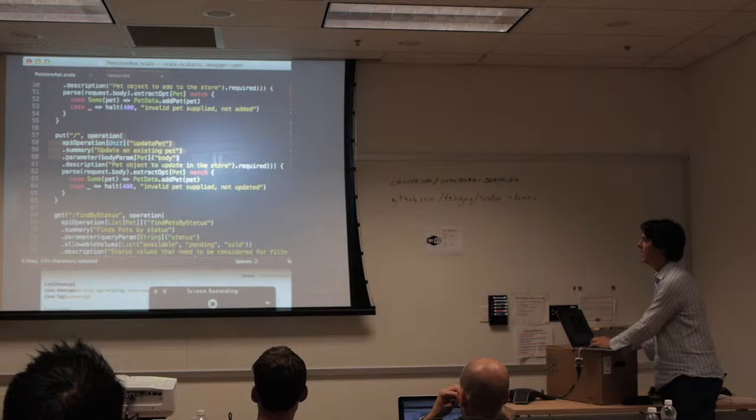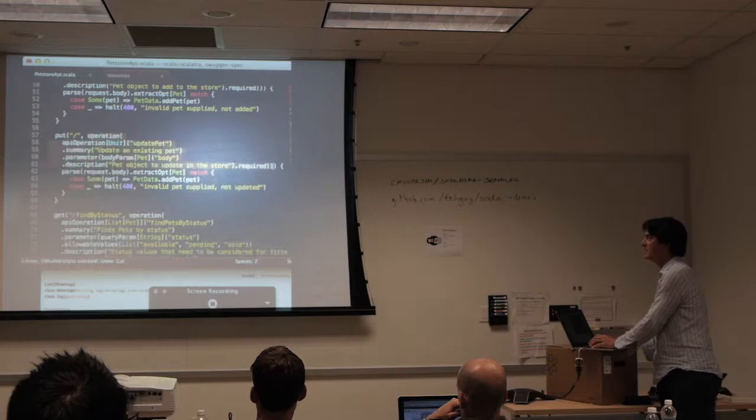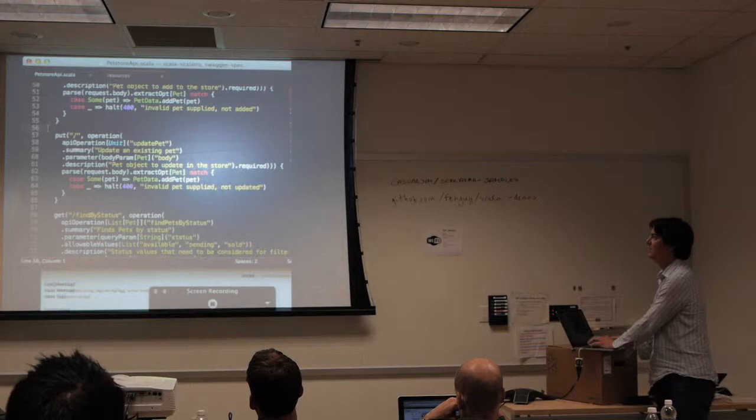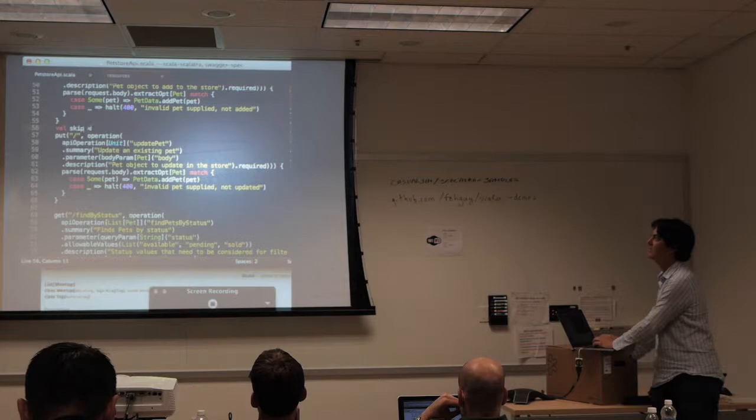If I take this piece of code out, that's all that Scalatra really needs — you don't necessarily have bound parameters as inputs, so we have to explicitly declare them. We do the same thing with Play 2. To make this easier on the parameters side, we describe common parameters — like skip and limit, which are used across all of our operations.